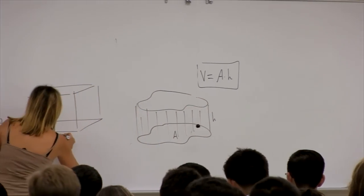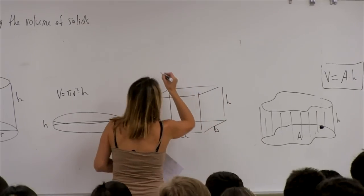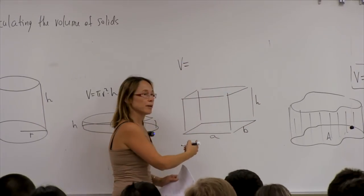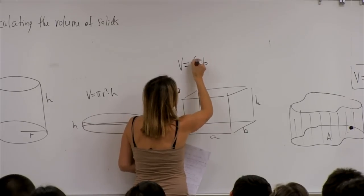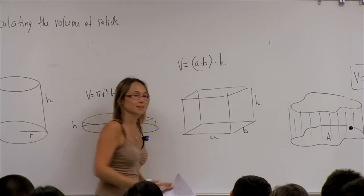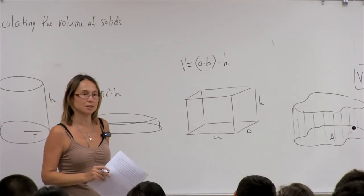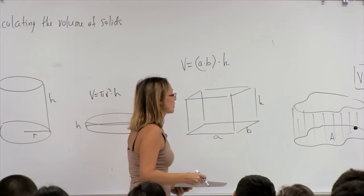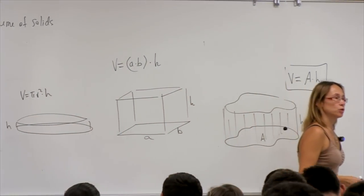For a general cylinder, I don't have a formula like that. But if I know the area of the base and the height, then the volume is given by area times height. For example, with dimensions a, b, h, the volume is a times b times h — the multiplication of three dimensions.